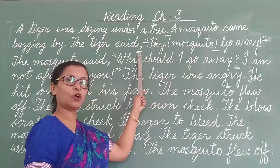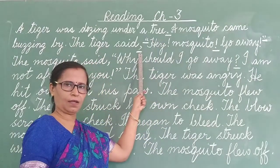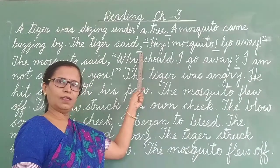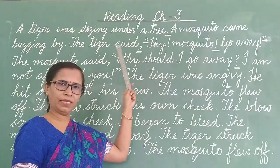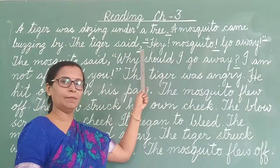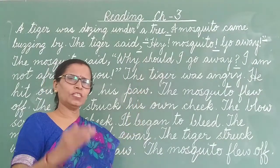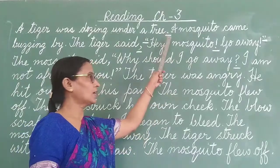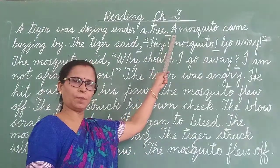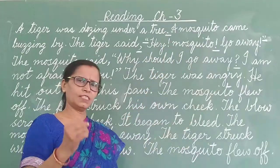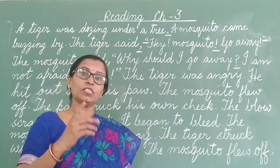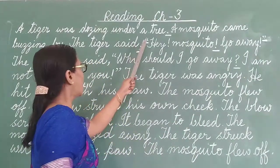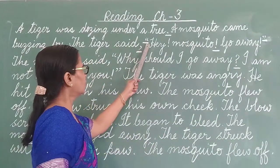What is this? Comma. When there is a comma in the middle of a sentence, you will stop for a while — not as long as you stop at a full stop, just for a while. But you will stop.